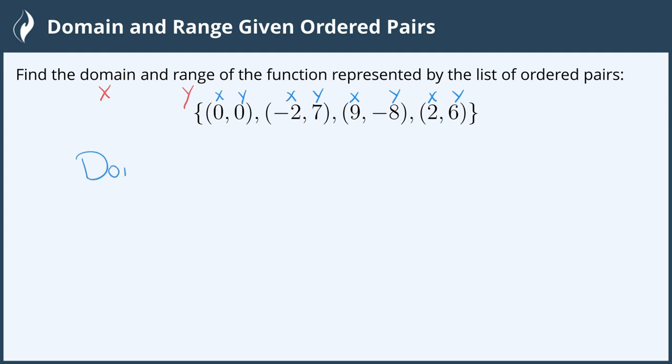If we are looking for the domain we can list them as a set using some curly braces and listing all of the first values in each of the ordered pairs. So we get the set of {0, -2, 9, 2}.